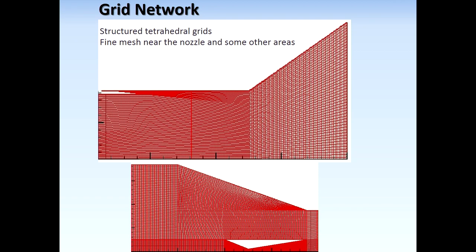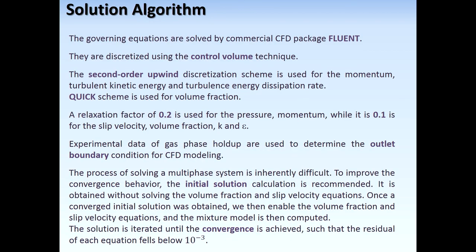The grid uses structured tetrahedral meshes with fine mesh near the nozzles and walls. The governing equations are discretized using the control volume technique. The second-order upwind discretization scheme is used for momentum, turbulent kinetic energy, and turbulent energy dissipation rate. The QUICK scheme is used for volume fraction. A relaxation factor of 0.2 was used for pressure and momentum, while 0.1 was used for slip velocity, volume fraction, k, and epsilon.